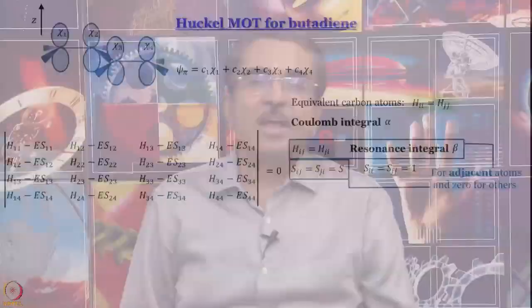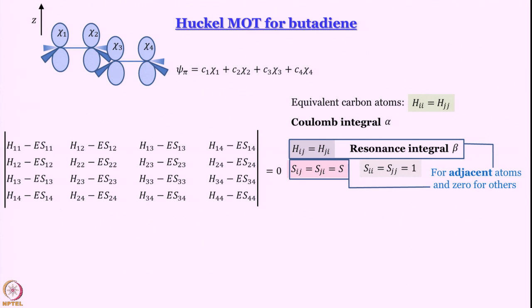Now, let us see what we have. Another thing that we need to worry about is overlap integral. Even overlap integral in Huckel theory, it is considered that by similar logic overlap integral can have some nonzero value only for adjacent atoms. Chi 1 and chi 3 is not going to have too much of overlap anyway because the distance is already fixed by the sigma bonding network. They cannot come any closer.